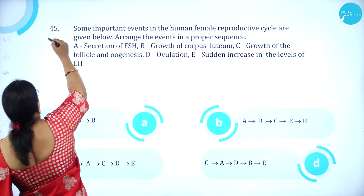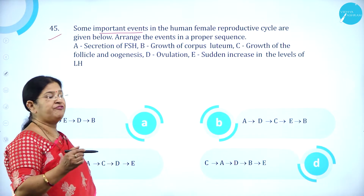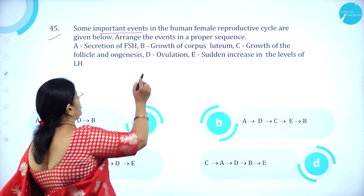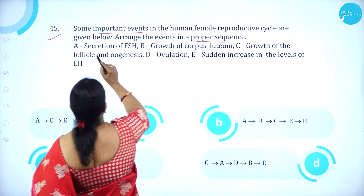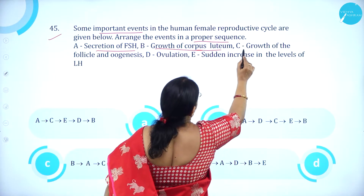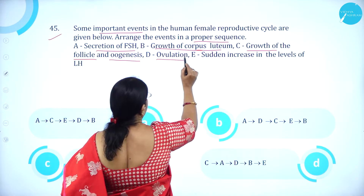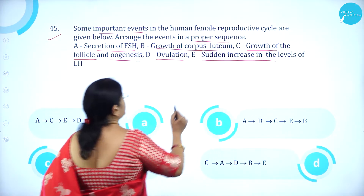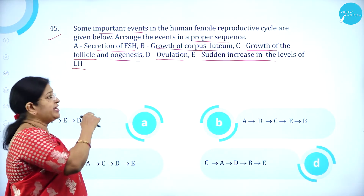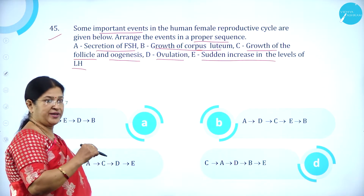Moving on to question number 45. Some important events in the human female reproductive cycle are given below — arrange the events in a proper sequence. A: secretion of FSH. B: growth of corpus luteum. C: growth of the follicle and oogenesis. D: ovulation. E: sudden increase in the levels of LH.